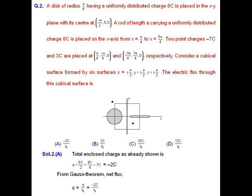According to Gauss's law, the net flux passing through an enclosed surface equals the total charge enclosed by that closed surface divided by epsilon naught. So net flux equals summation of Q divided by epsilon naught.